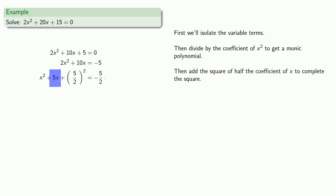So we're going to add the square of 5 halves to both sides. We went through all of this work so that our left-hand side was a perfect square. So we'll rewrite it as a perfect square.